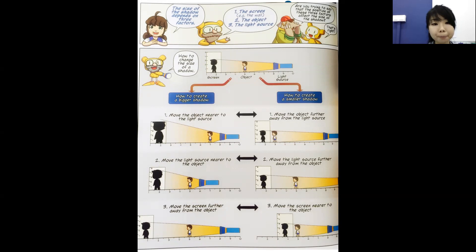The first way to get a bigger shadow is to move the object nearer to the light source, or simply move the light source nearer to the object. We decrease the distance between the light source and the object. That gives us a bigger shadow. The second way is to move the screen further away from the object.